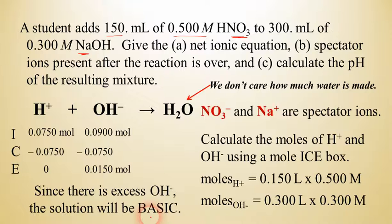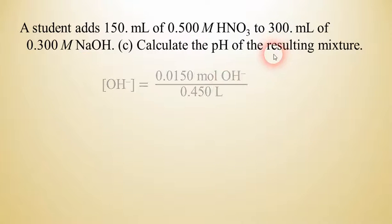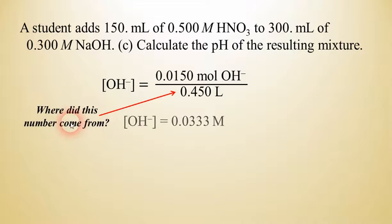Now to find the molarity of this, we have to take the moles of hydroxide and divide by the total volume of solution. So we have 150 mils of acid and 300 mils of base. So that's 450 mils, or we divide by 0.45 liters of solution. So when we divide that out, of course, we know where that comes from. That's the total volume. And the hydroxide concentration, when you divide, is 0.0333 molar, approximately.